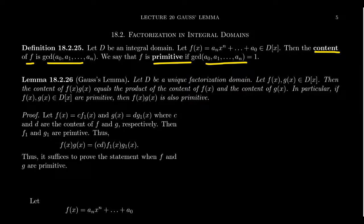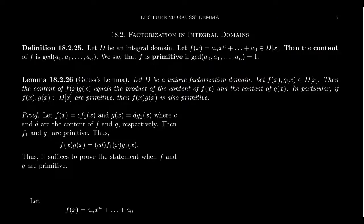Admittedly, GCDs might not even exist in all integral domains, so this content might be undefined for certain polynomials. But in the setting of a unique factorization domain, arbitrary GCDs do exist. Therefore, every polynomial has a well-defined content, and the notion of a primitive polynomial always makes sense. This is the setting in which Gauss's Lemma will take place.